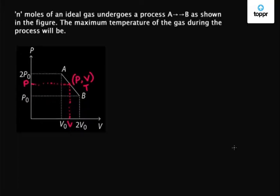Now we write the equation of this line having this point. So (P - P0) / (2P0 - P0) equals (V - 2V0) / (V0 - 2V0).